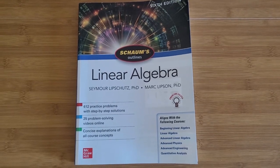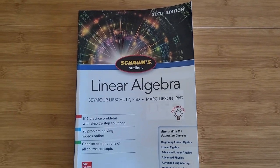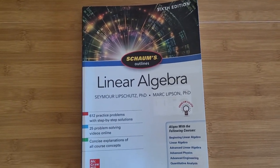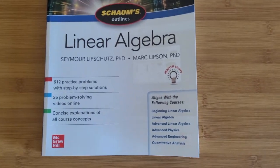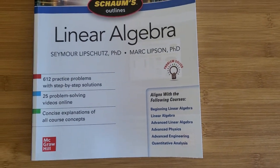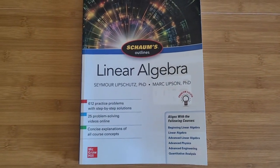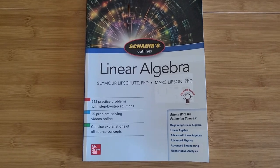This is my review of the Schaum's Outlines on Linear Algebra, sixth edition, but this review can basically apply to any edition of this book. As you can see on the bottom right here, this book can be used for the following courses, but really it's mainly intended for a first course in linear algebra at the college level, and I'll explain why that is in a bit.